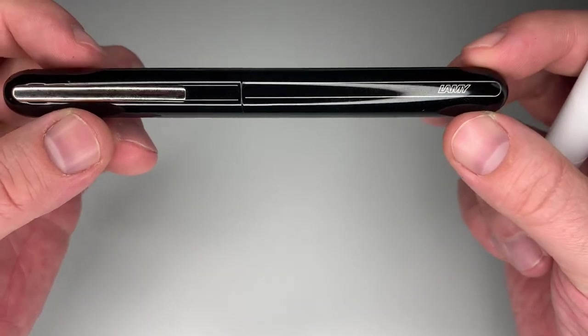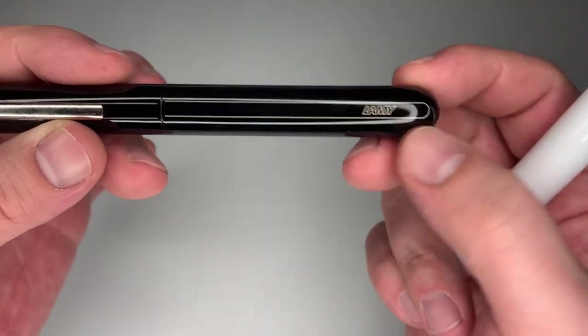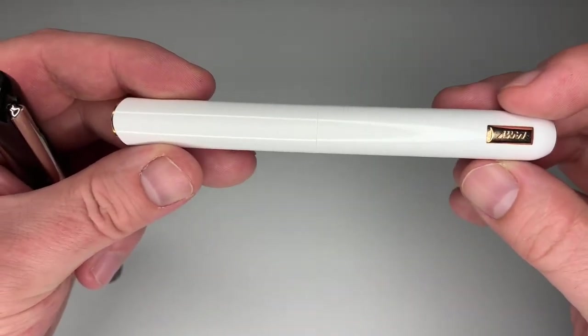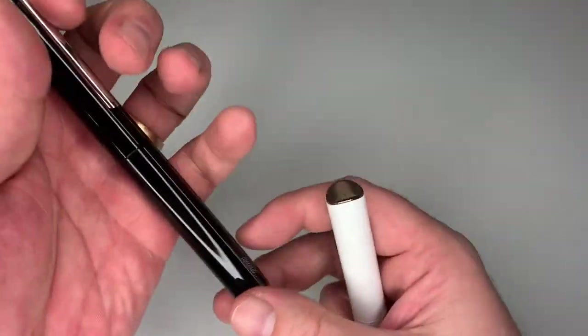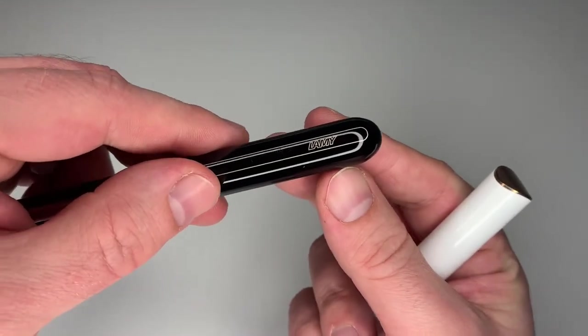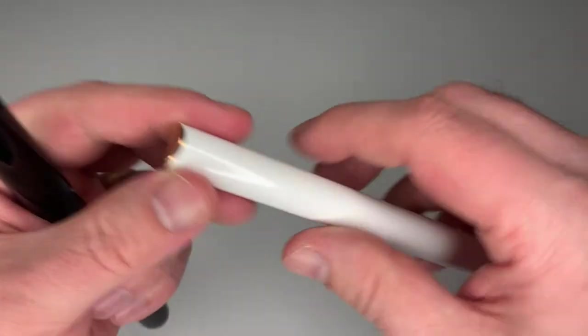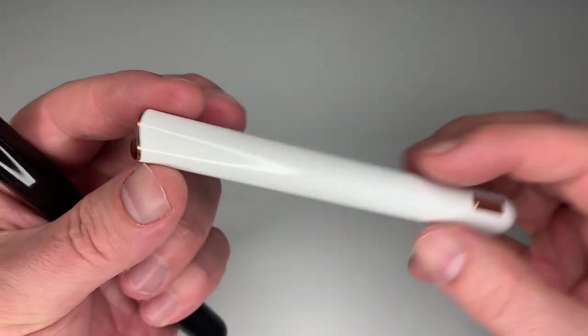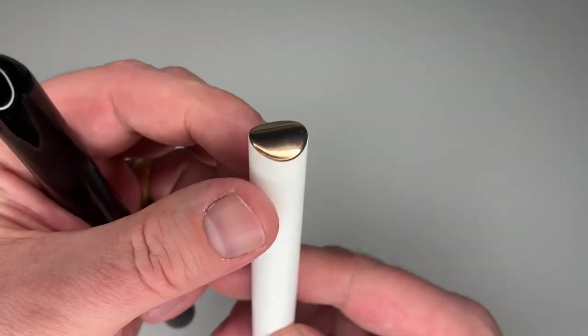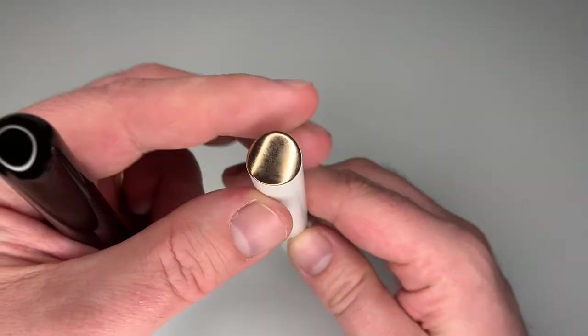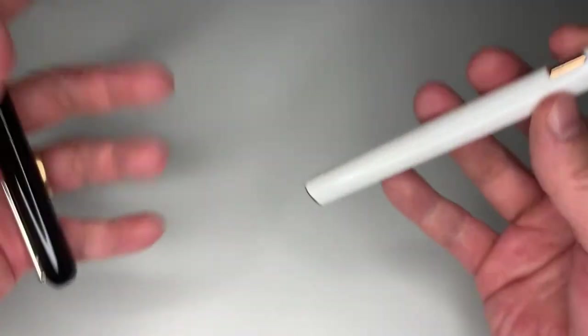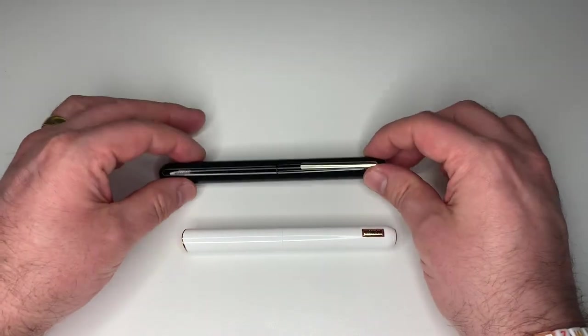The Lamy Dialogue 3 then has this kind of pattern here saying Lamy right at the end, which the Dialogue CC does not have. It's completely clean. At the end, the Lamy Dialogue 3 is rounded like a cigar, whereas the Dialogue CC has this kind of shape with a rose gold accent matching the rose gold here and there.